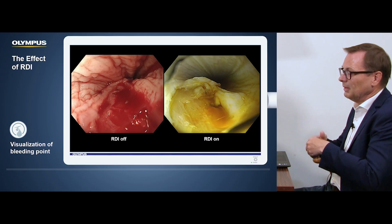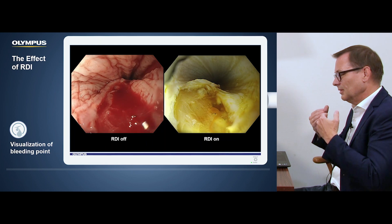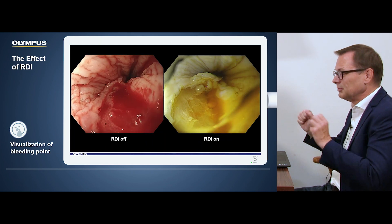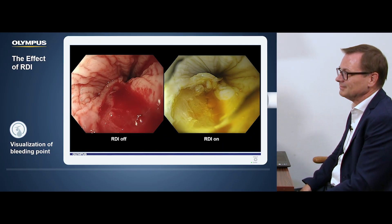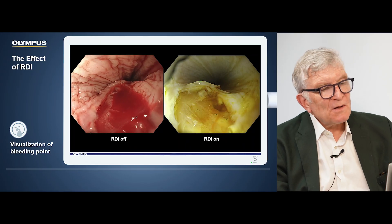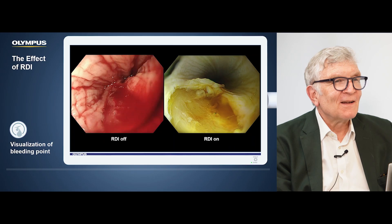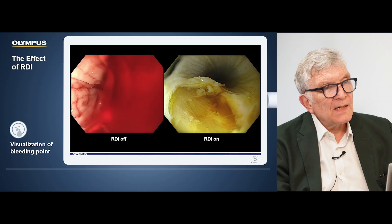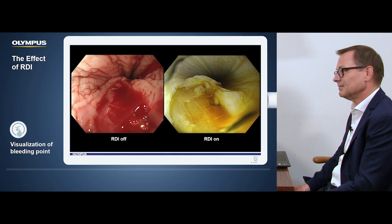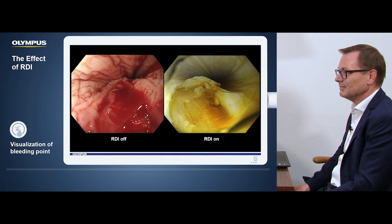On the left side you see the white light, on the right side RDI, and it even looks like you are looking through the diluted blood and you can see the bleeding spot very nicely. People also say in discussions it's more reassuring if bleeding is orange because it doesn't look that dangerous. But we can summarize that there are two purposes: one is to identify a bleeding spot better — though it doesn't work in massive bleeding where everything is red — but in bleeding of moderate intensity, I think it can be helpful.